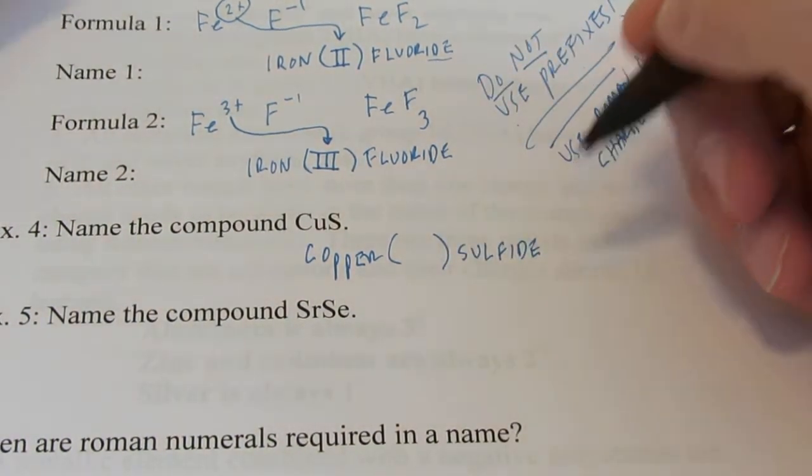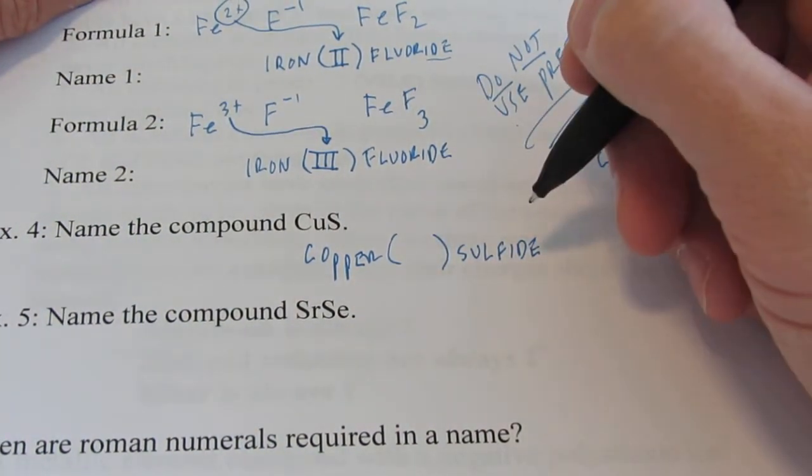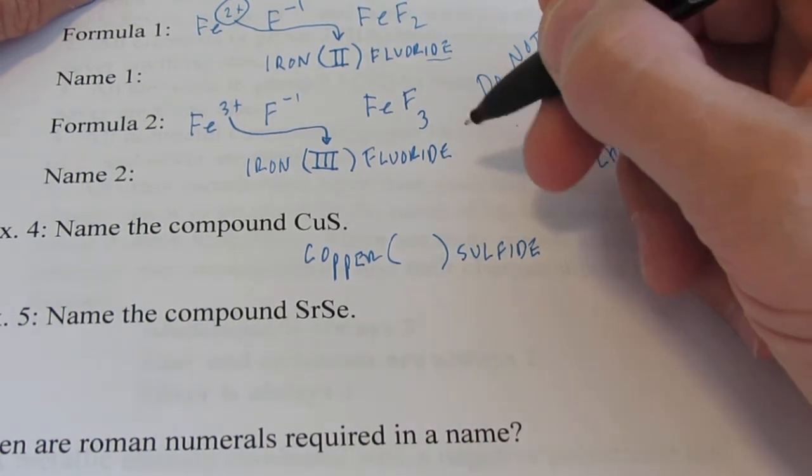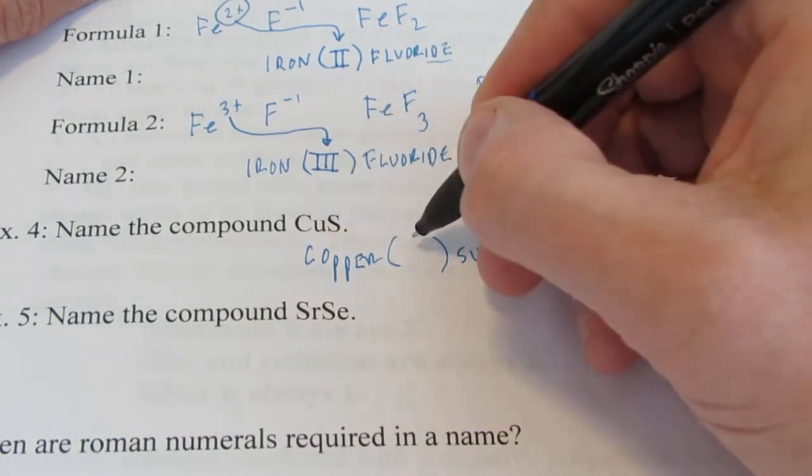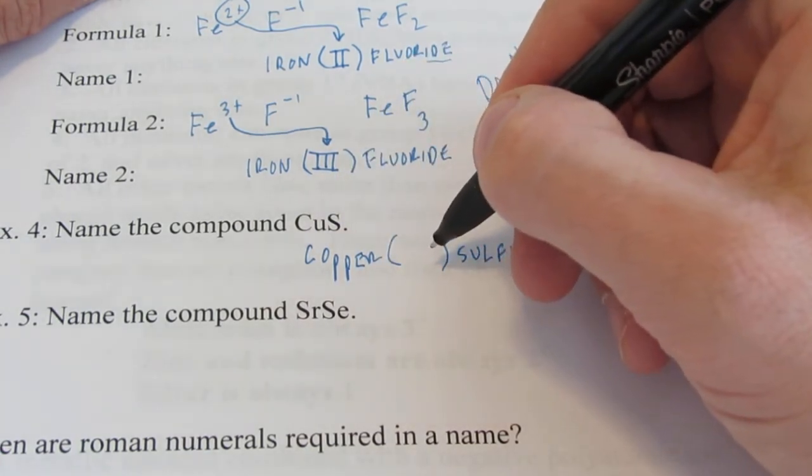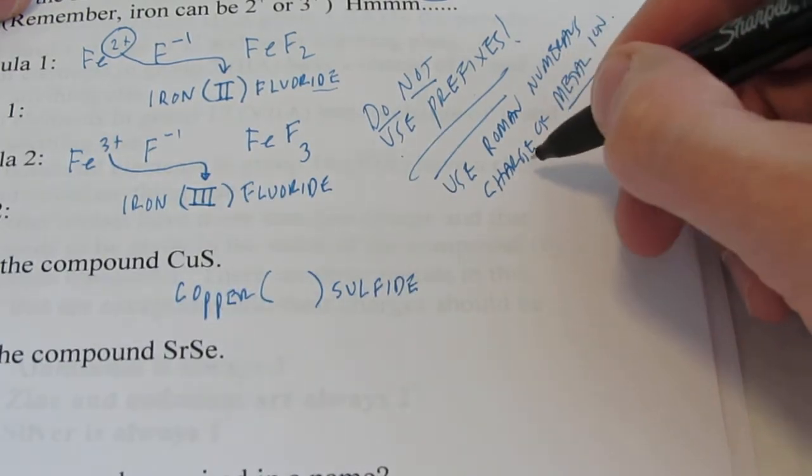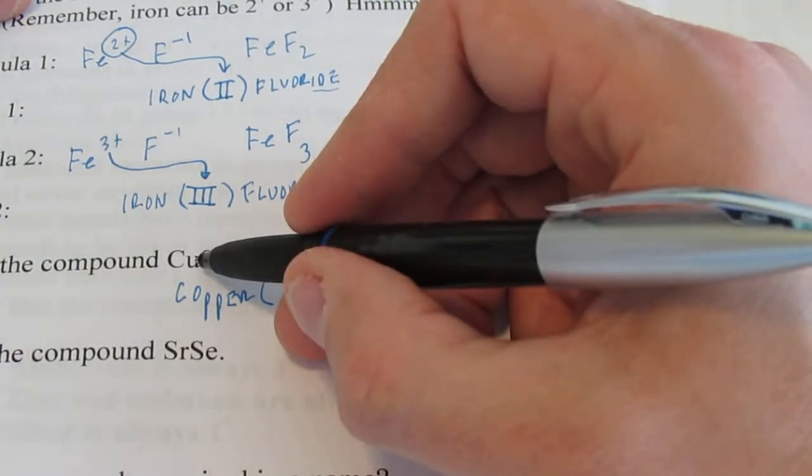Now, what Roman numeral do I put there? That's a great question. Do I put the Roman numeral 1 or the Roman numeral 2? Some that haven't been listening are going to say, oh, there's one copper there. So I'm going to put the Roman numeral 1 there. No, that's not what I said. We use Roman numerals to tell us the charge of the metal ion.